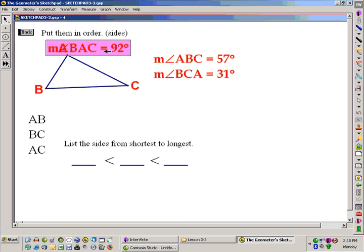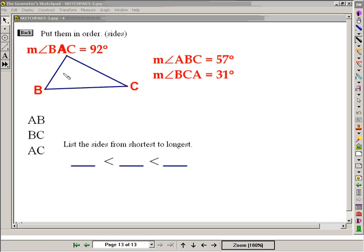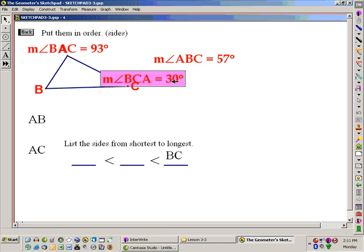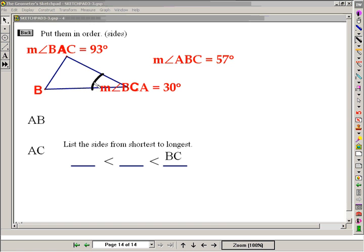Therefore, if angle A is the largest angle of this triangle, 92 degrees, then the longest side must be opposite this angle. And opposite that angle will be the segment BC. So BC will be the largest. Be careful of the order in which the question may ask. Here it's asking for the shortest first, the longest last. The smallest angle, angle C, will be opposite the shortest side, which in this case will be segment AB.